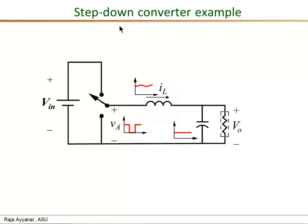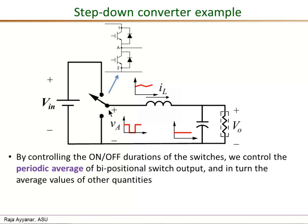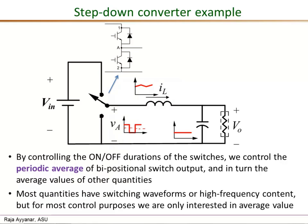Here is the basic step-down converter example that we have seen in some of the previous videos, and this bipositional switch has the electronic implementation as shown here. What we can directly control is the on and off durations of these two switches to produce a switching voltage waveform va at the output of the bipositional switch. We do this switching control in such a way to control the average value of va to be some desired value shown by this dotted line.